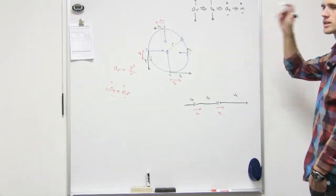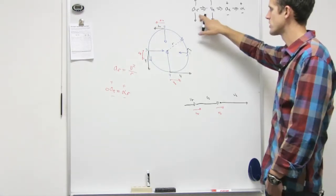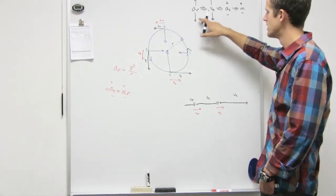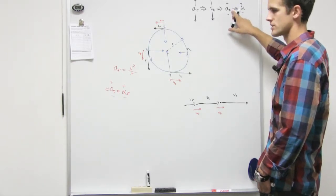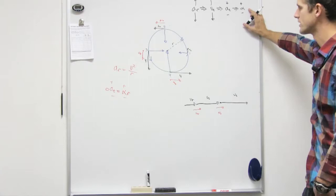So this is kind of how it works. If you have an increasing radial acceleration, that means you have an increasing velocity. Okay. Which means you have a positive tangential acceleration and a positive angular acceleration.